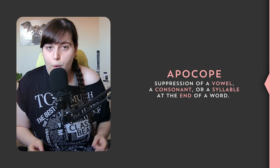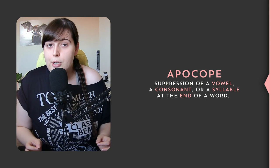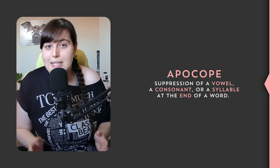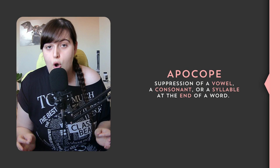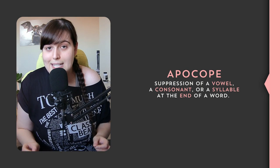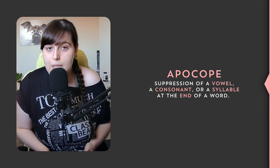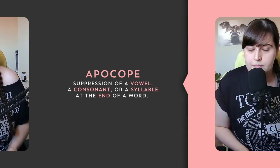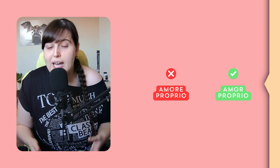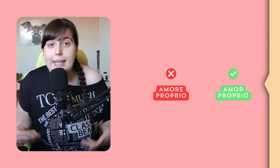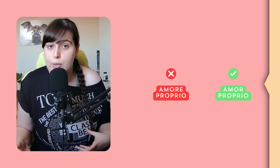Troncamento or apocope — truncation or apocope in English — is the suppression of a vowel, a consonant, or a syllable at the end of a word. Keep this in mind because it will be fundamental to understand how to tell apart apocope from elision in the next video. For example, we say 'amor proprio' and not 'amore proprio.' In other words, apocope is a linguistic shortcut that makes speech more fluent and smooth.